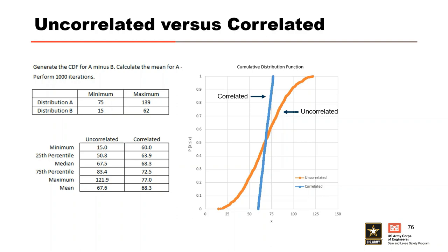This slide shows how the CDF changes when correlating distributions A and B — the distributions were uncorrelated for the orange CDF and correlated for the blue CDF. To correlate distributions in Excel, use the same random number to sample both distributions at a given iteration so that sampling high for one means sampling high for the other. Correlation mostly reduces the variance in the output distribution because it eliminates the chance of sampling high from A and low from B, or vice versa. Even though the range in the outcome is smaller, the mean and median will be comparable whether distributions are correlated or not.